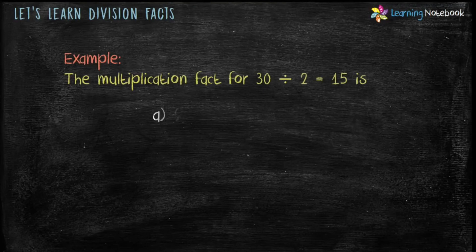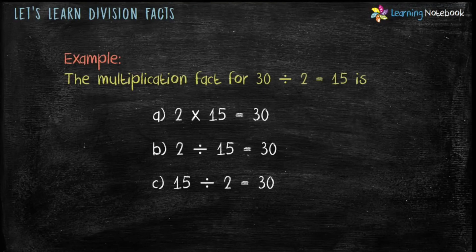Now students, can you tell which one of the following is the multiplication fact for 30 divided by 2 equals 15? In this, we are given the division fact and we have to find its multiplication fact. So our answer is A: 2 into 15 equals 30.